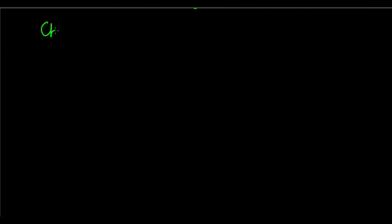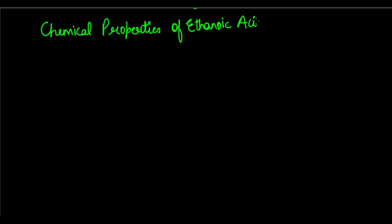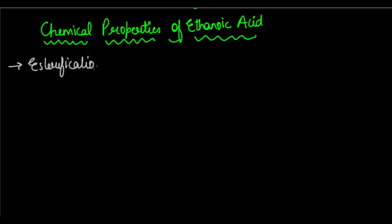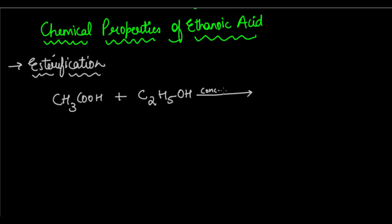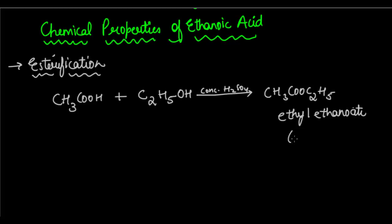The first and foremost chemical property, which you have already done, is the esterification reaction. Ethanoic acid reacts with alcohols to form esters. For example, CH3COOH reacts with ethanol C2H5OH in the presence of concentrated H2SO4 to give CH3COOC2H5, which is ethyl ethanoate — your ester.